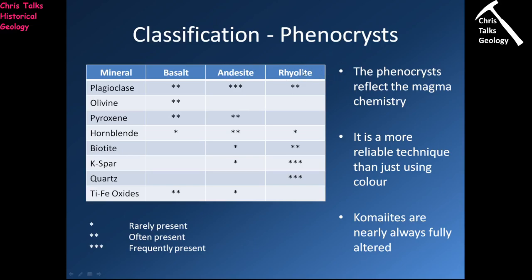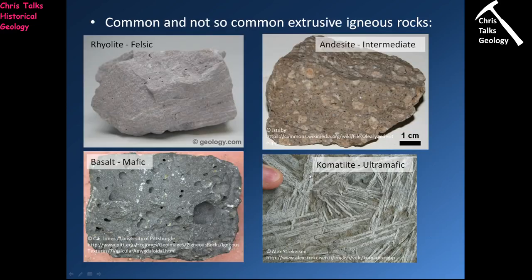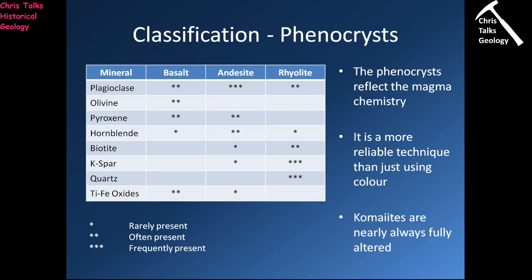When it comes to rhyolites, we typically get large quantities of potassium feldspar phenocrysts and some quartz phenocrysts as well. Potassium feldspar and quartz don't really appear in either basalt or andesite, so if we start seeing potassium feldspar or quartz phenocrysts, we have to be looking at something felsic in composition — a rhyolite. Even if the colour is somewhat different, we can use the phenocrysts to work out which type of lava-related volcanic igneous rock we're looking at.